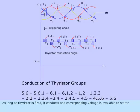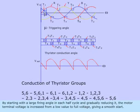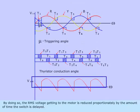As long as thyristor is fired, it conducts and corresponding voltage is available to stator. By starting with a large firing angle in each half-cycle and gradually reducing it, the motor terminal voltage is increased from a low value to full voltage, giving a smooth start. By doing so, the RMS voltage getting to the motor is reduced proportionately by the amount of time the switch is delayed.